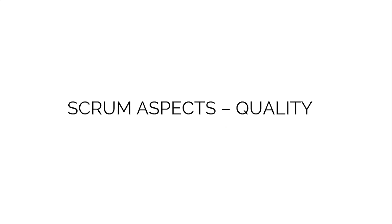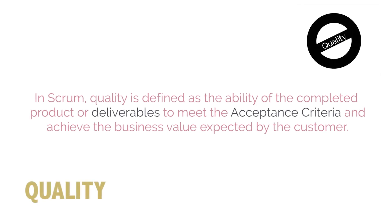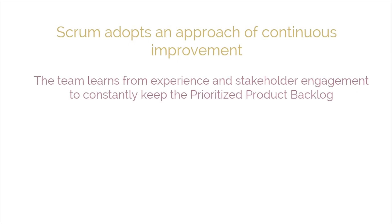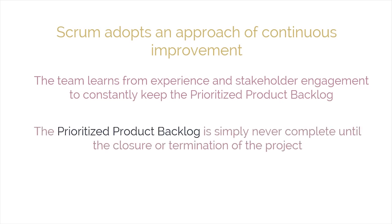Quality is the third aspect we are going to discuss. In Scrum, quality is defined as the ability of the completed product or deliverables to meet the acceptance criteria and achieve the business value expected by the customer. To ensure a project meets its quality requirements, Scrum adopts an approach of continuous improvement, whereby the team learns from experience and stakeholder engagement to constantly keep the prioritized product backlog updated with any changes in requirements.